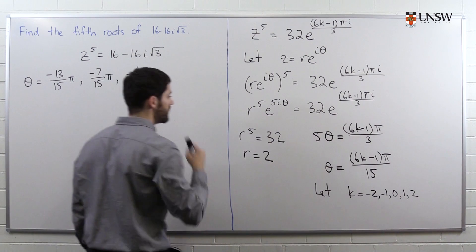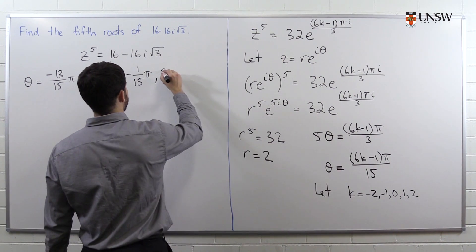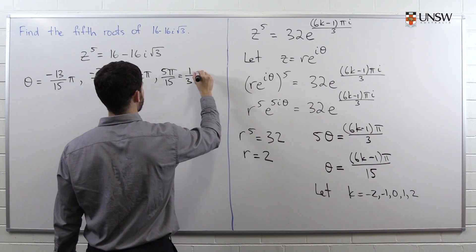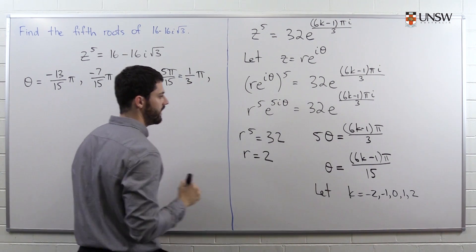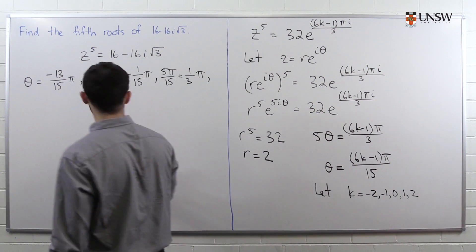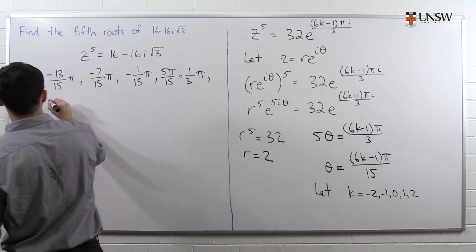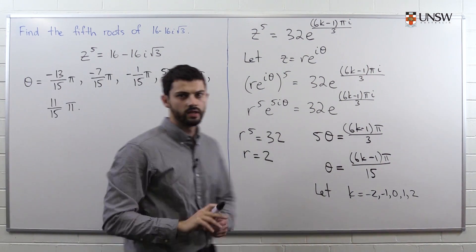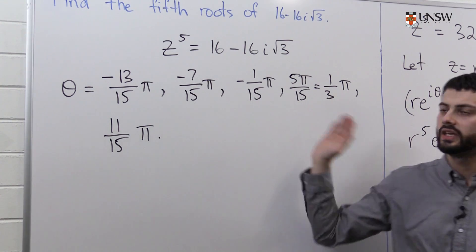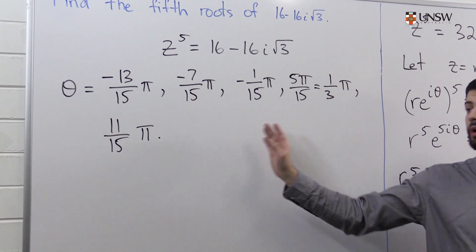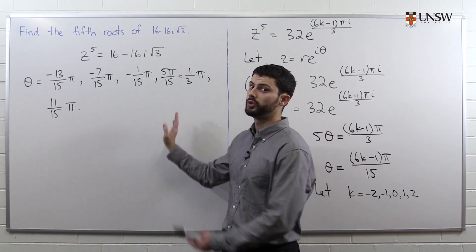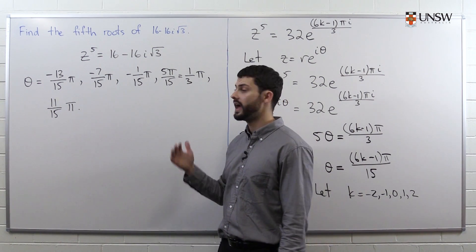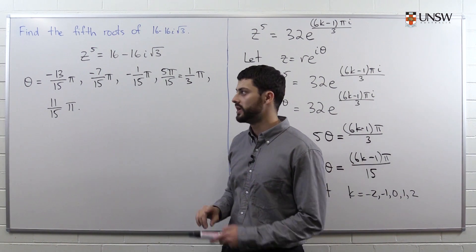If I substitute in 1, I will get 5π/15, which is also just π/3. And if I substitute in 2, I will get 11π/15. And you can see that all of these numbers here are between minus π and π, so they're indeed all principal arguments. And we don't need to do any more work. By that, I mean, we don't need to subtract 2π or add 2π to any of these to get the principal argument.